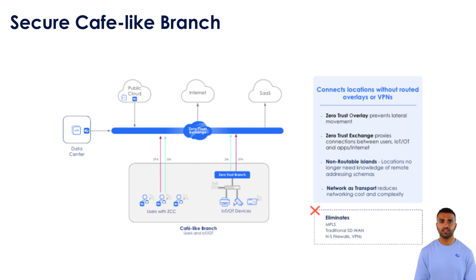A branch might typically have employees working on managed laptops. Zscaler uses a lightweight client connector to forward internet and private app traffic to the Zero Trust Exchange. If you only have managed users, this is all you need. However, if you have IoT/OT devices in your branch — like card readers, cameras, printers — you can deploy a Zero Trust Branch appliance at that site. The branch appliance securely forwards internet and private app traffic to and from devices through the Zero Trust Exchange, with no agents required. Similarly, Zscaler connectors in the cloud and data center ensure access to private applications, all brokered through the Zero Trust Exchange.